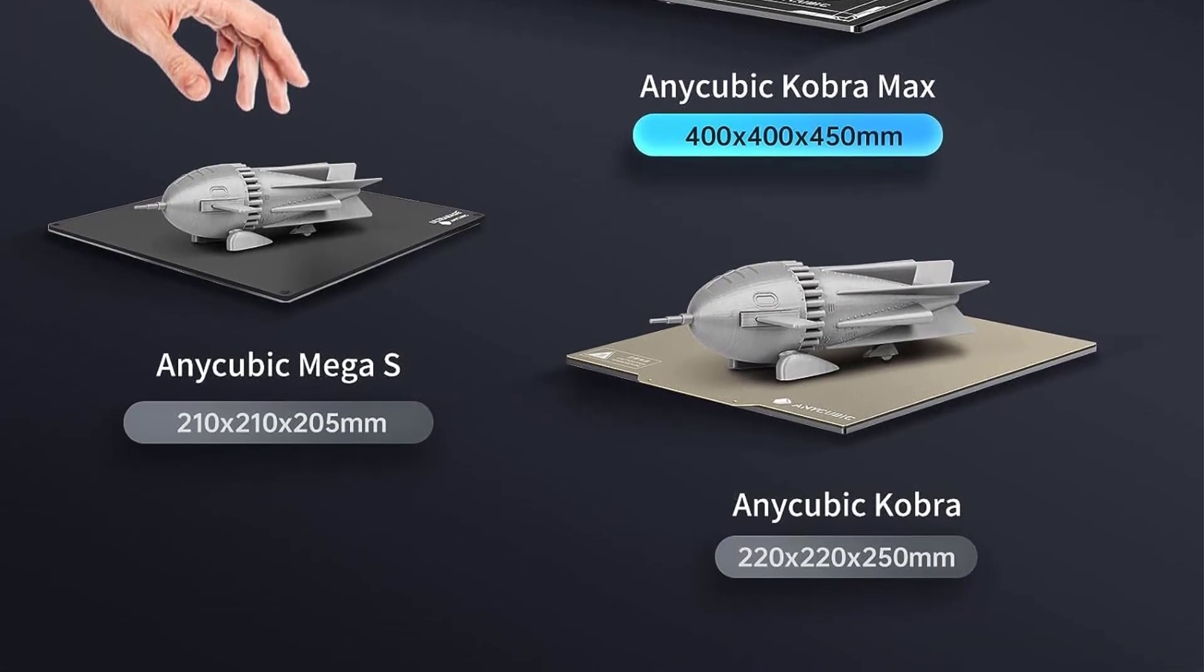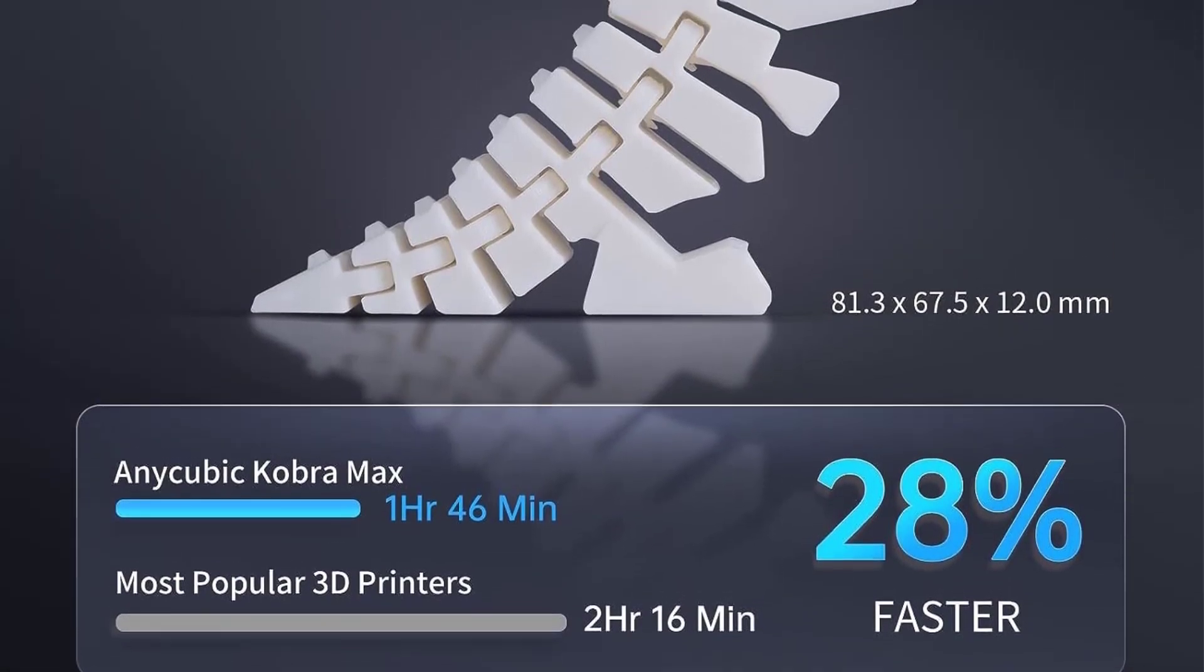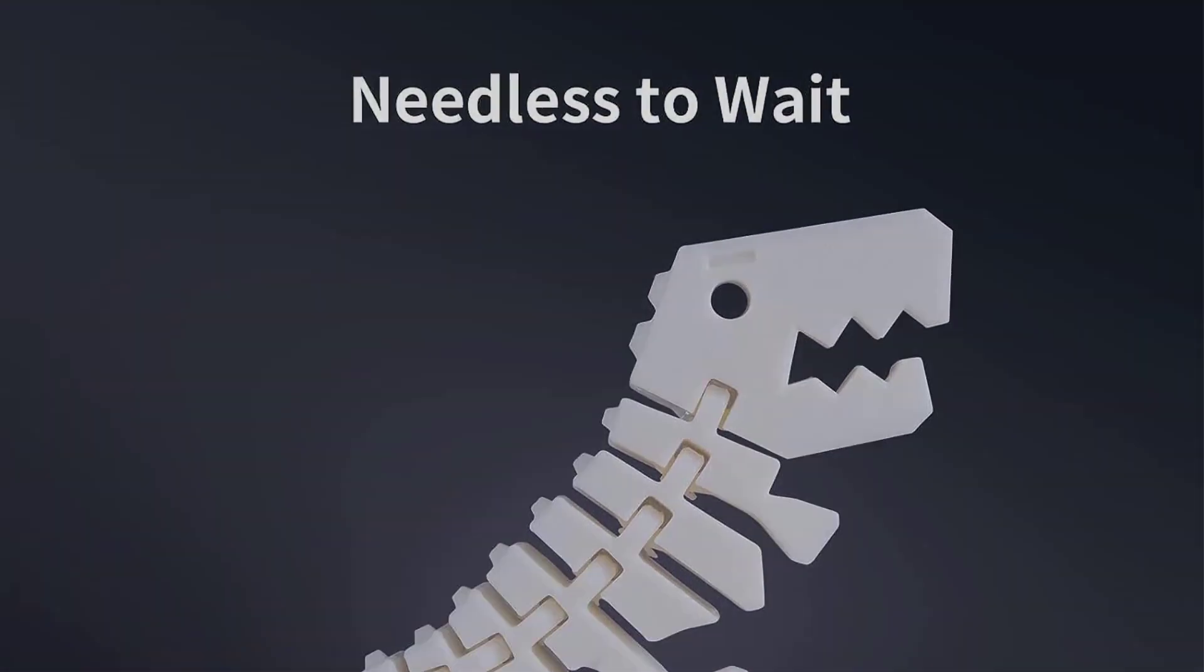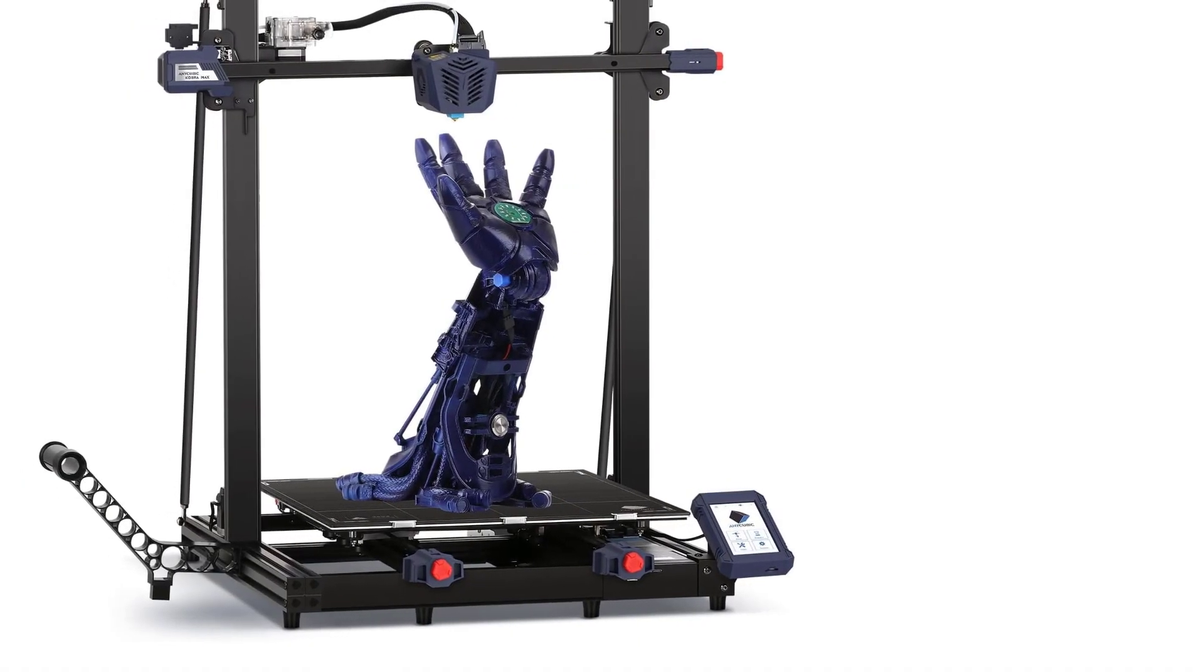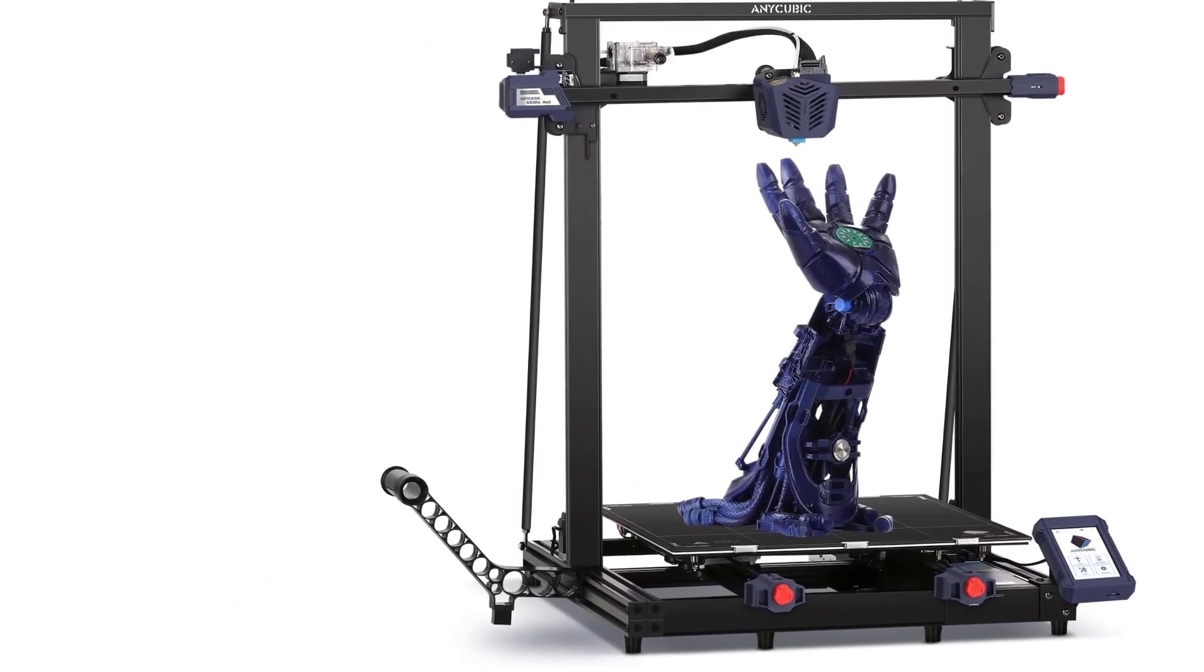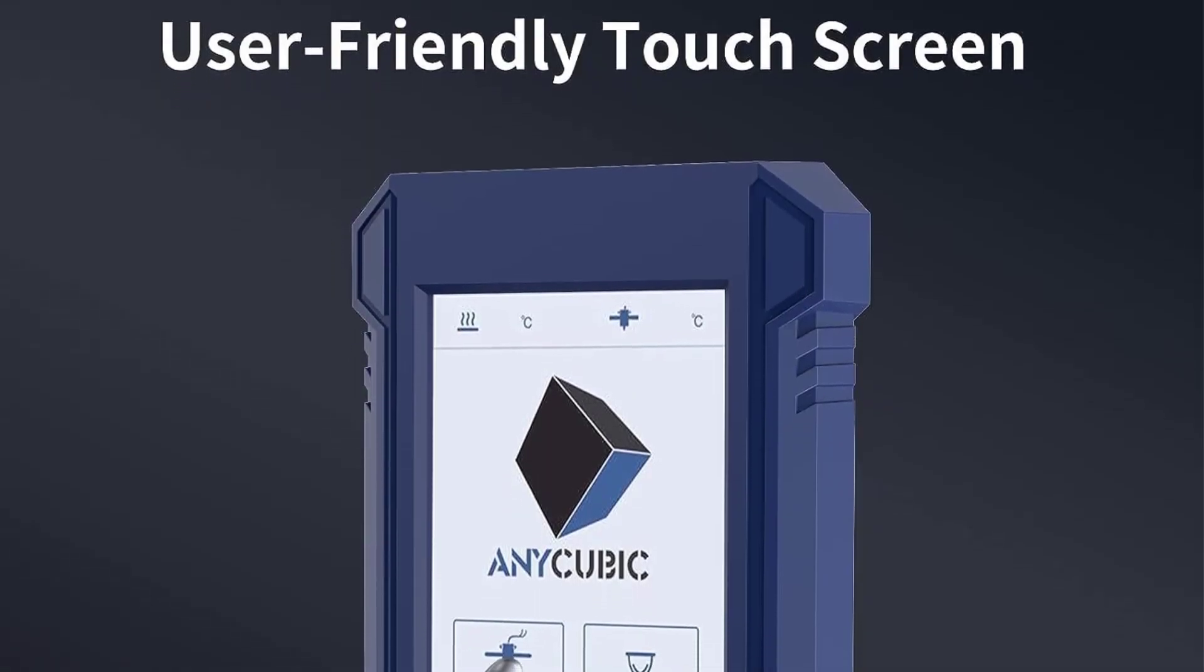With its massive build volume of 400 by 400 by 450 millimeters, the Cobra Max can output huge prints. We found no real effort was necessary on our part to confidently achieve full plate prints, points out All3DP. A robust chassis, dual geared extruder, and volcano style hot end give the Cobra Max almost all the tools for large 3D printing.